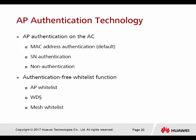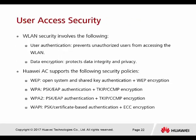WLAN encryption technologies: WEP uses RC4 algorithm, which is easy to decrypt. WPA supports PSK (pre-shared key) and EAP authentication, with TKIP and CCMP encryption formats. WPA2 is the enhanced version of WPA, also supporting both authentication modes. WAPI uses certificate-based authentication and ECC encryption. To deploy WPA or WPA2 on an 802.11 network, you must configure CCMP encryption. If other encryption modes are configured, the network falls back to 802.11 standards.